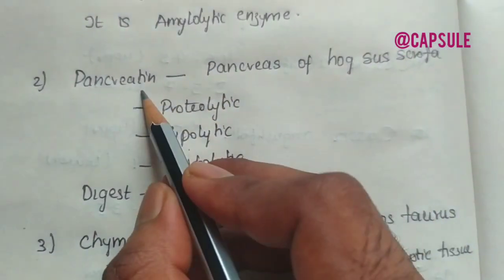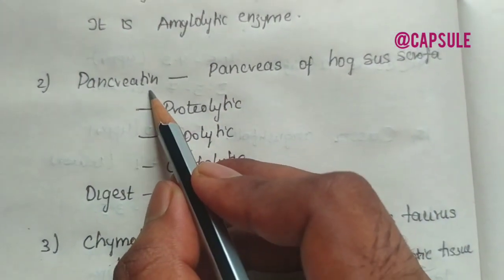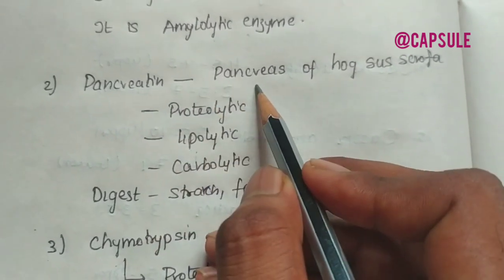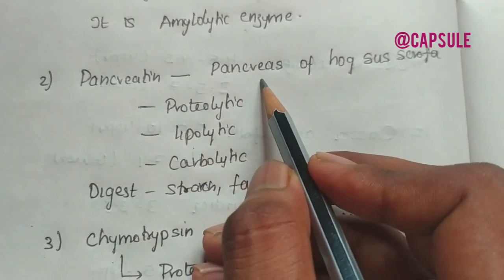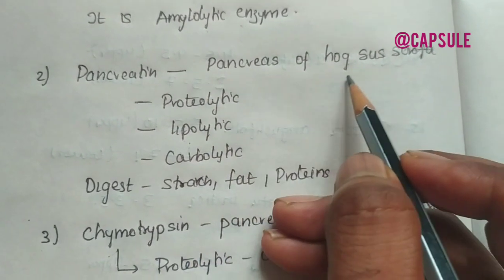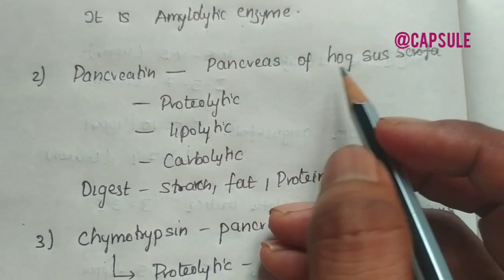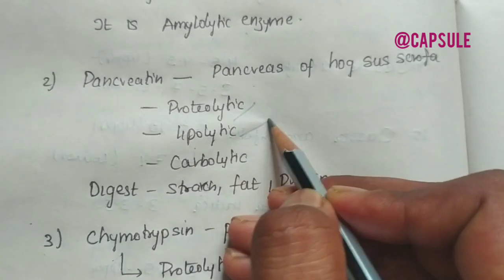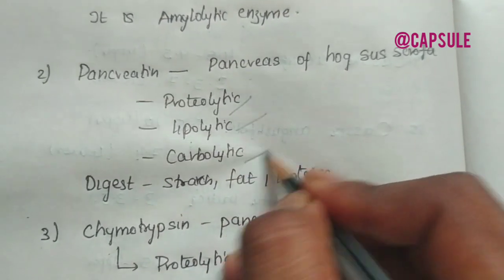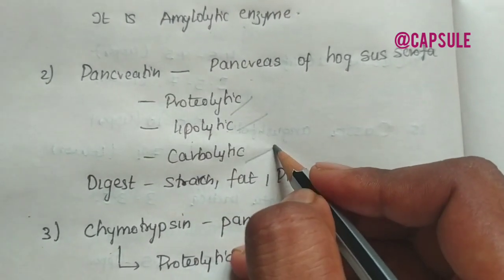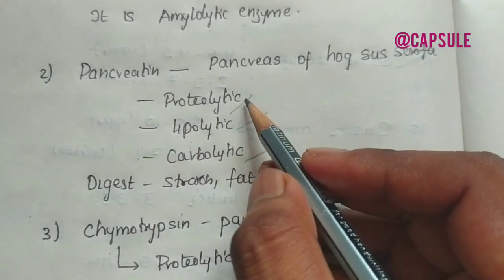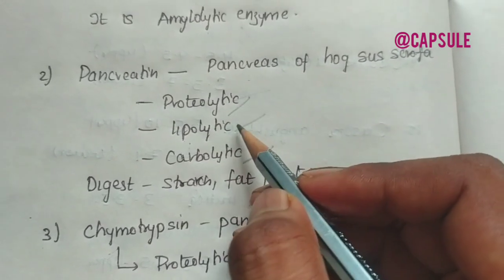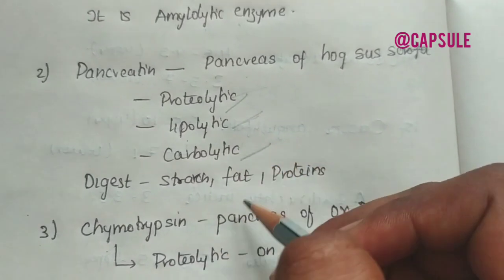Coming to the next one, pancreatin. Pancreatin is obtained from the pancreas of Bos taurus. Pancreatin is a proteolytic, lipolytic and carbolytic enzyme. It acts on or digests proteins, lipids and carbohydrates.